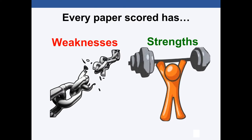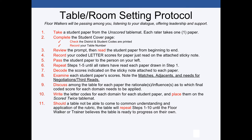Every paper scored has both strengths and weaknesses — we've seen that when we looked at the rubric — and that's really what we talk about in a negotiation or third-read situation. There is also a table or room setting protocol we're going to use. You can pause and read through the eleven steps, but please remember that when you begin scoring or someone comes on site to facilitate a scoring session, they will go through these eleven steps with you to get you ready to score so that your scores are both reliable and valid.